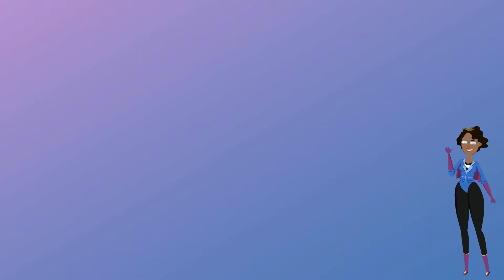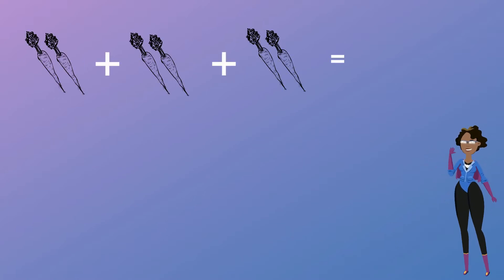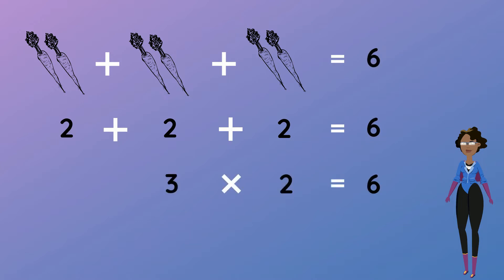Look at the addition of the carrots below. The repeated addition for this would be 2 plus 2 plus 2 equals 6. And the multiplication would be 3 multiplied by 2 equals 6. This means 3 sets of 2 equals 6.